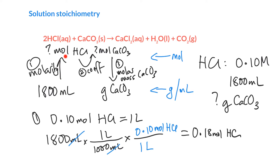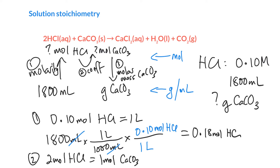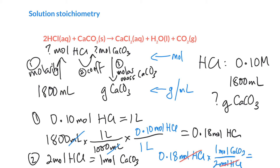Step two requires us to go to the moles of calcium carbonate. We use our coefficients in the chemical equation — there are two HCls to one calcium carbonate. So we write a conversion factor: two moles of HCl on the bottom to cancel those units, and one mole of calcium carbonate on top. Taking our 0.18 moles of HCl and canceling units gives us 0.090 moles of calcium carbonate.